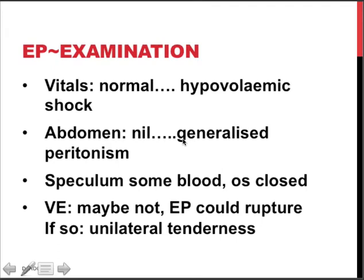Examination can vary as well. First, check the vitals for signs of hypovolemia or hypovolemic shock — a whole spectrum from nothing to very impressive findings. Abdominal examination may reveal nothing or generalized peritonism. On speculum examination we might see some blood, but usually the os is closed as there is no miscarriage. Bimanual examination is controversial as it might contribute to rupture; however, a very gentle examination may reveal unilateral tenderness, though this is not very sensitive or specific.